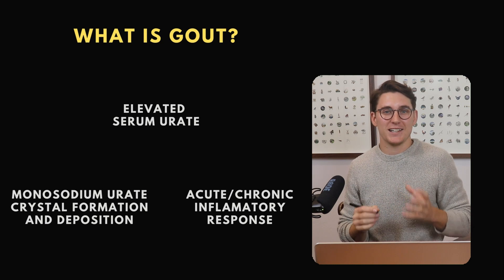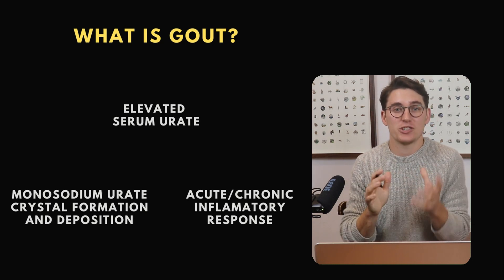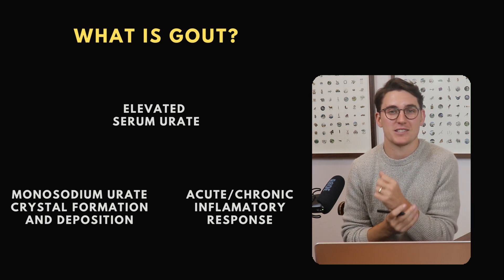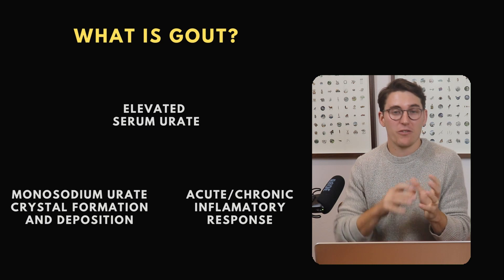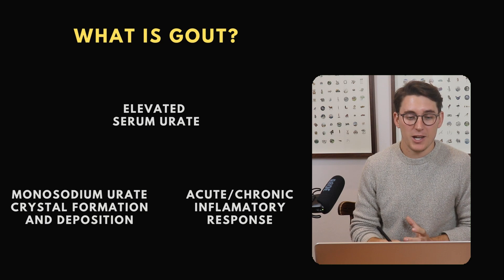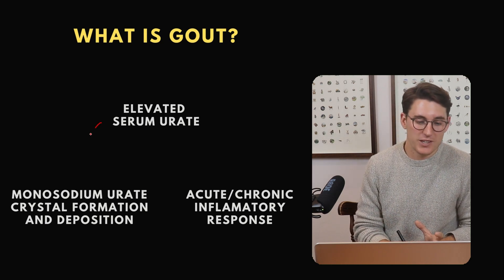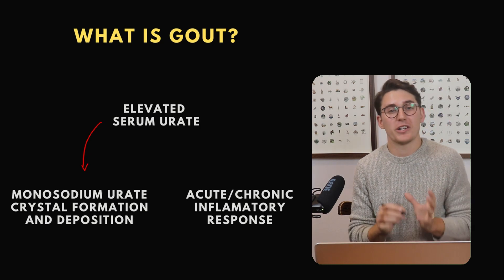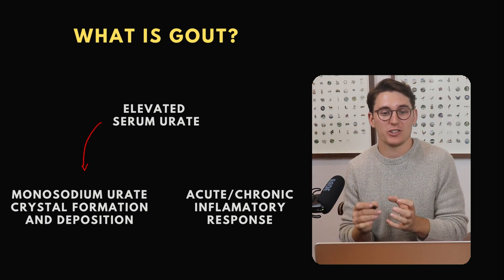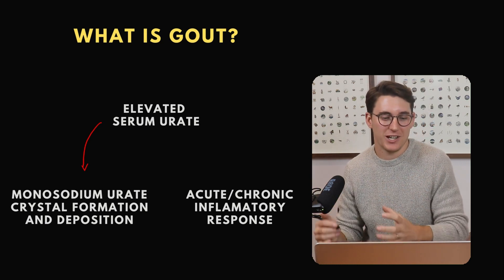When you ask many people what exactly is gout, they mention elevated levels of serum urate, and that is true — a patient who has gout needs to have periods of elevated serum urate. But the vast majority of patients who have high urate levels will never go on to develop gout. Patients with high urate levels can be predisposed to developing monosodium urate crystals in the blood and then depositing those crystals into tissues, and it's this formation and deposition which leads to the sequelae of clinical gout.